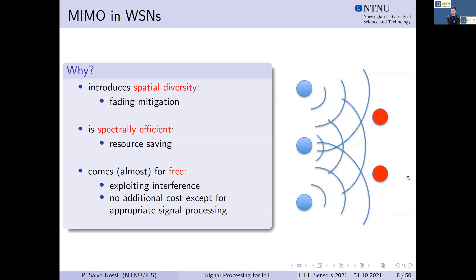One relevant thing to say is that we will be using multiple input multiple output (MIMO) methodologies in this wireless sensor network context for distributed detection. Those familiar with communication theory will know MIMO. The main reason for introducing this into wireless sensor networks is that MIMO systems introduce spatial diversity, providing fading mitigation and being spectrally efficient, allowing exploitation of multiple antennas to reduce energy requirements.